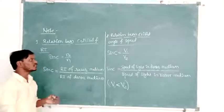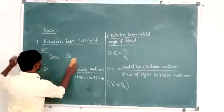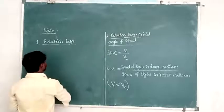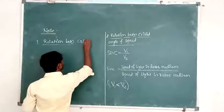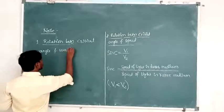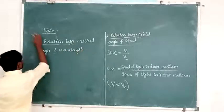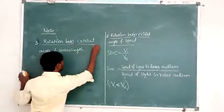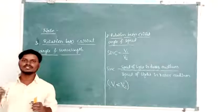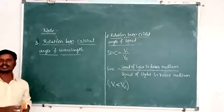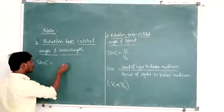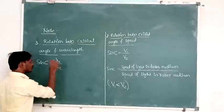We are also going to write the critical angle in terms of wavelength — the third relation. Since n2 by n1 equals V1 by V2, and V1 by V2 equals λ1 by λ2 (because speed and wavelength are directly proportional), sin C equals λ1 by λ2.